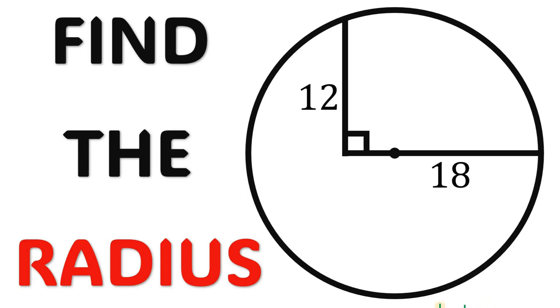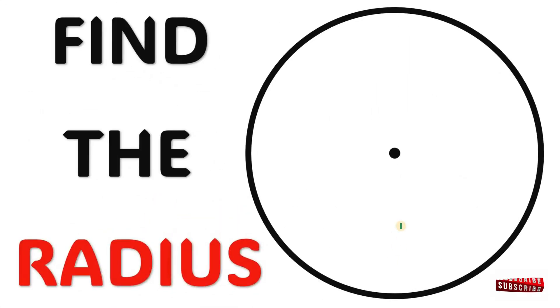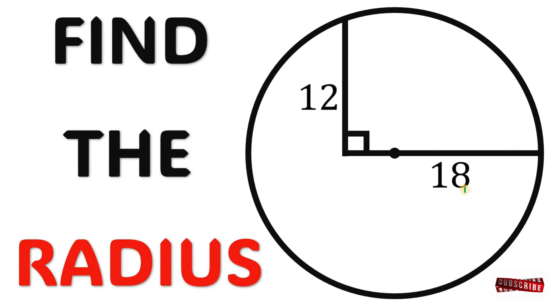Can you solve this geometry challenge? Here's the question: Given this circle, let's draw a segment that passes through the center of the circle and has a measure of 18 units. Now let's draw another segment that measures 12 units, and these two segments are perpendicular to each other. The question is, what is the radius, the length of the radius of this circle?